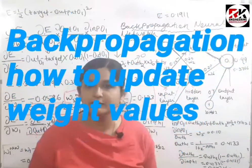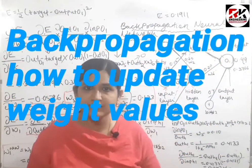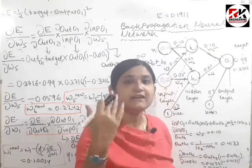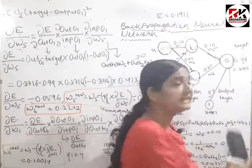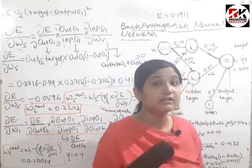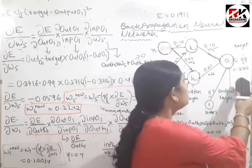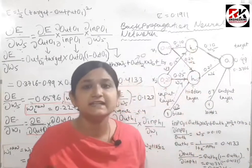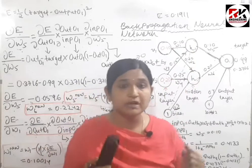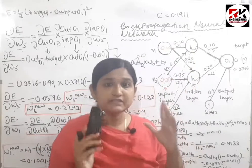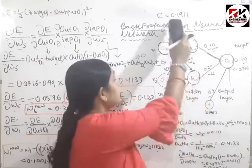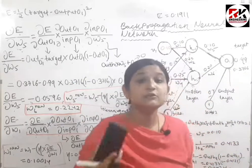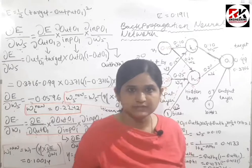Hello everyone, today is Part 2 of backpropagation neural network. In the previous session we did forward propagation. We have a target of 0.99 but we got our actual output as 0.3716, so we have an error of 0.1911. In today's Part 2, our focus is to make this error value 0 and make the actual output equal to 0.99, that is our target output.